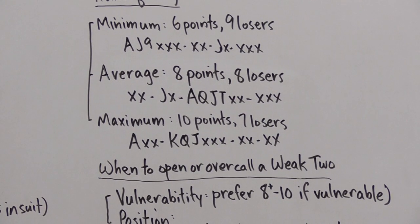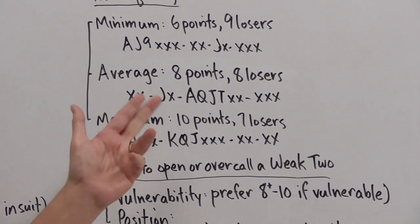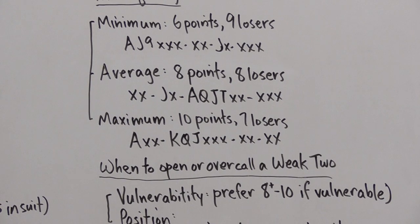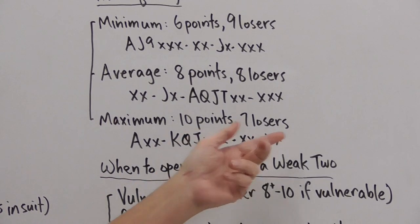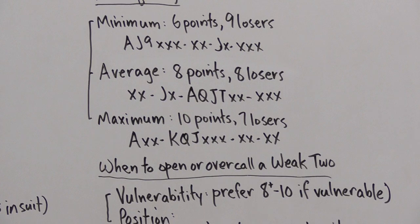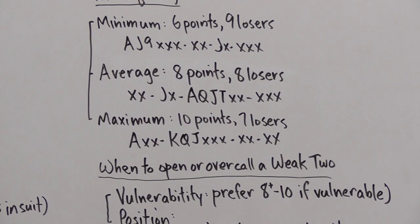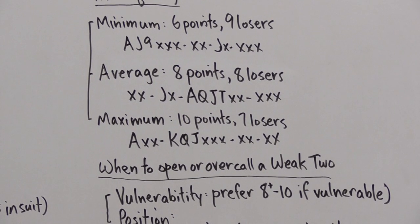And then finally a maximum is ten points and seven losers. So this would be such a hand. We've got an ace, a king, a queen, and a jack, that's ten points. We've got two losers in spades, one in hearts, and seven total. So this is a maximum opening weak two.